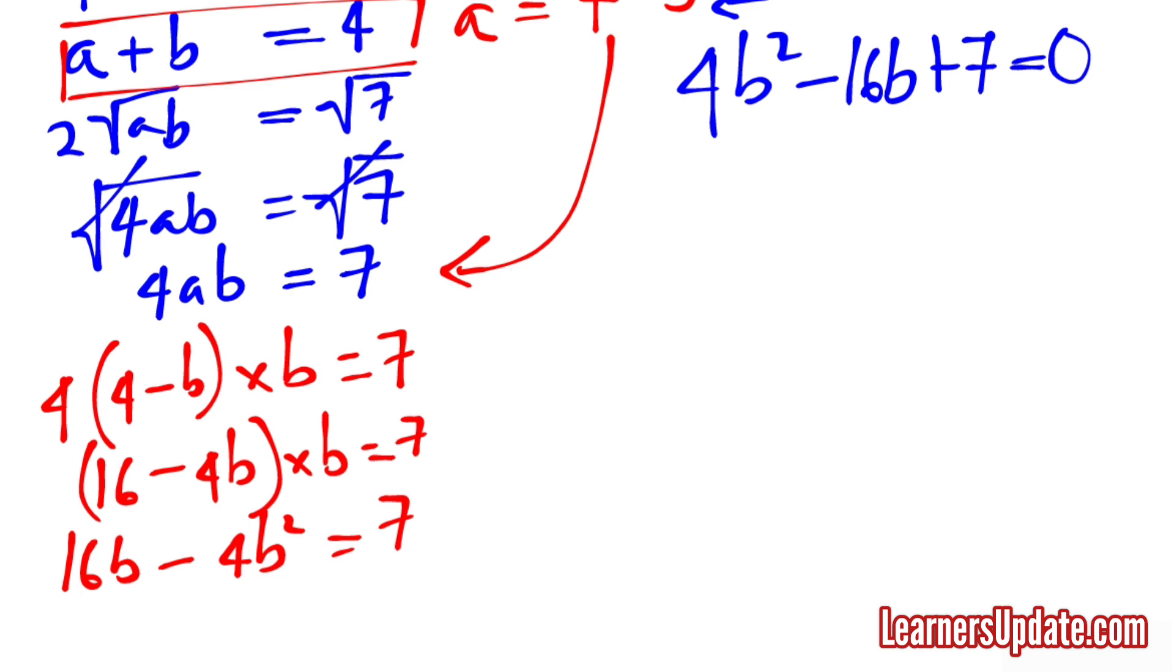This can also be written as 4B squared minus 14B minus 2B plus 7 equal to 0.